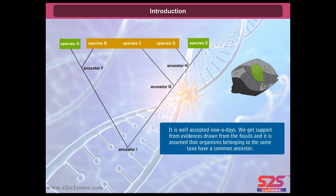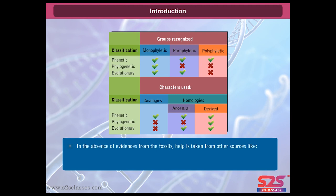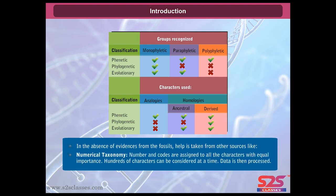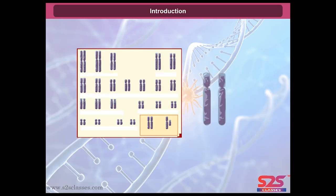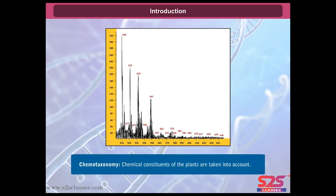We get support from evidences drawn from the fossils, and it is assumed that organisms belonging to the same taxa have a common ancestor. In the absence of evidences from the fossils, help is taken from other sources like numerical taxonomy, where numbers and codes are assigned to all characters with equal importance, and hundreds of characters can be considered at a time. Cyto-taxonomy considers the number, structure, and behavior of chromosomes. Chemo-taxonomy takes the chemical constituents of plants into account.